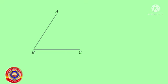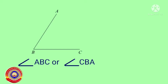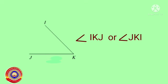Next, naming angles. Here is an angle. How will you name this angle? It can be named as angle ABC or angle CBA, keeping in mind that the vertex should be at the center. Now how will you name this angle? Here the vertex is K, so the name of this angle is angle IKJ or angle JKI. Is it clear for you?